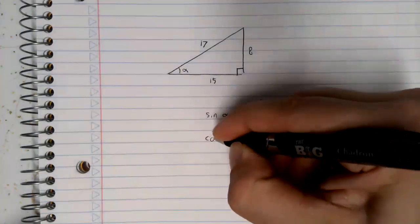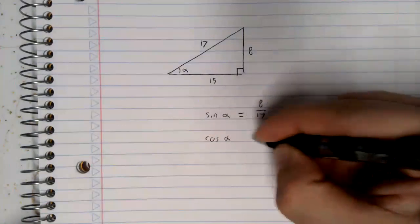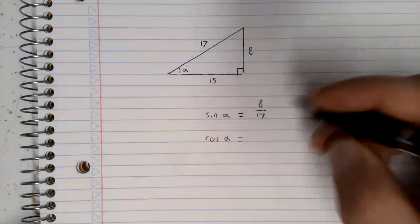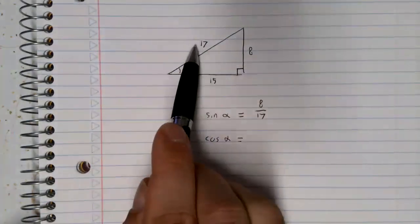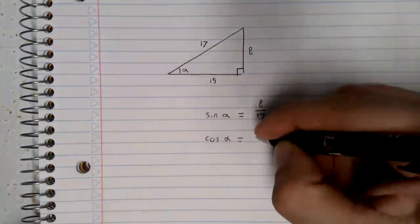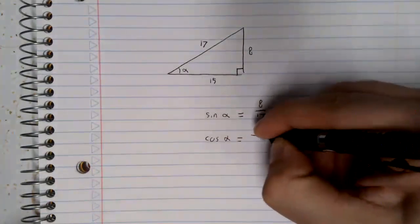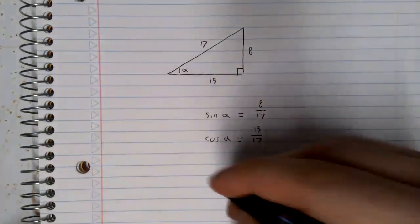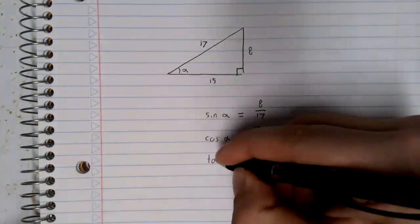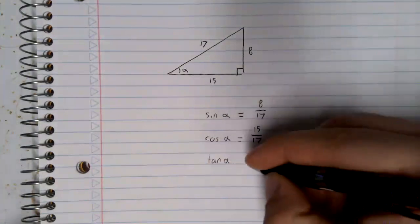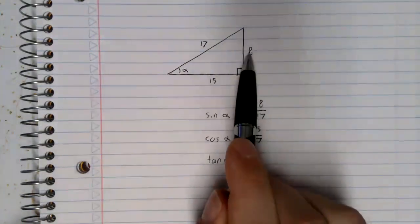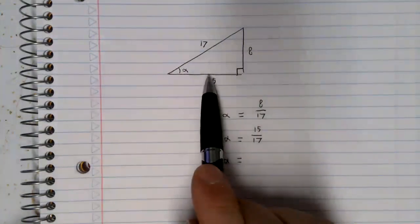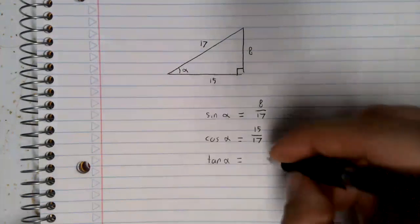The cosine of alpha is the adjacent side over the hypotenuse. And the tangent of alpha is the opposite side over the adjacent side.